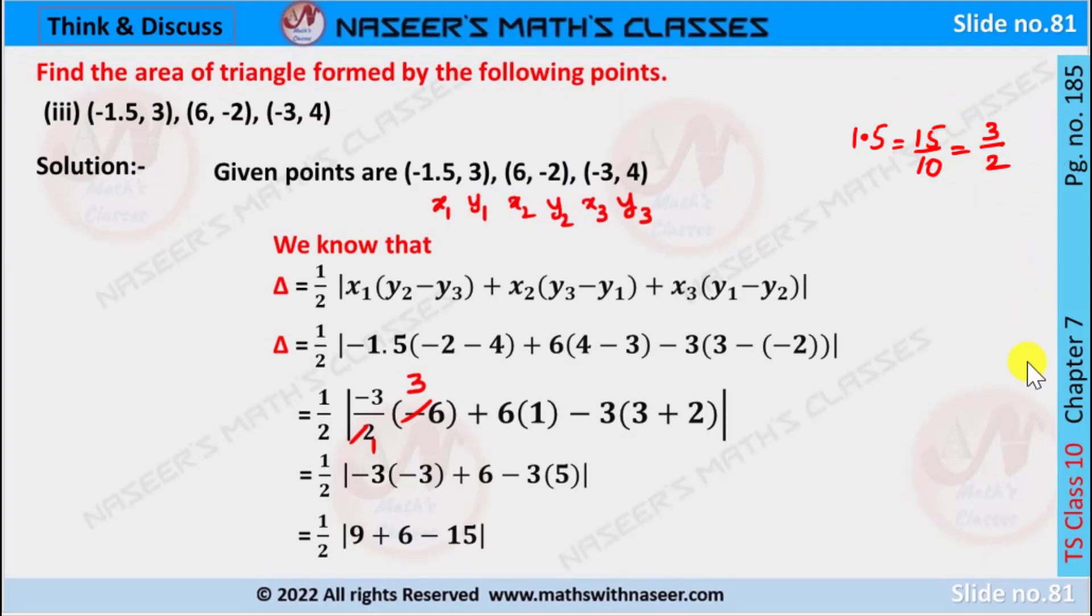Today we are going to discuss page number 185, chapter 7, coordinate geometry. Find the area of the triangle formed by the following points.